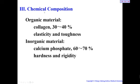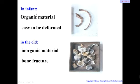The chemical composition of bone includes two materials: organic material and inorganic material. In an infant, there is more organic material, so the bone is very easy to deform — it can be bent and curved. In the elderly, there is more inorganic material, so the bone is very brittle and easily fractured — a condition called bone fracture. These differences in composition are important to understand.